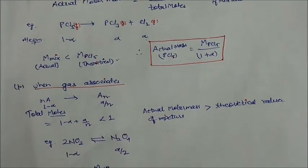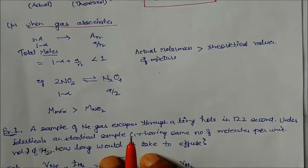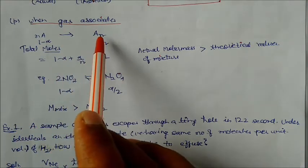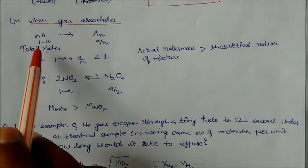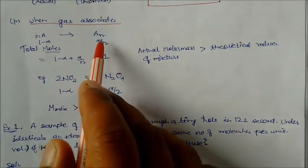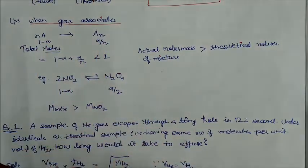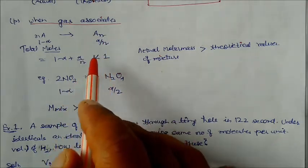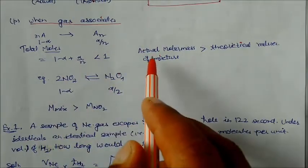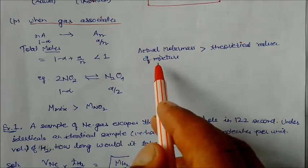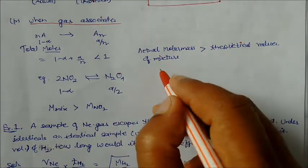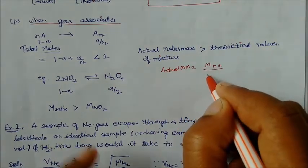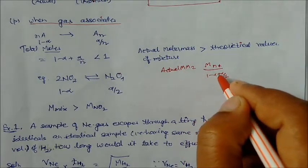Now let us consider when gas associates. It is also possible that two or more molecules combine together. n molecules of A combine to form Aₙ. At equilibrium, moles of A remaining = (1−α), and moles of Aₙ formed = α/n. Total moles at equilibrium = (1−α) + α/n, which is always less than 1. In association, total moles < 1.